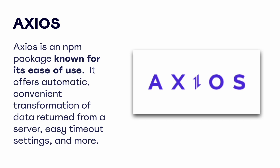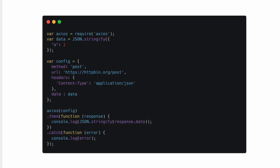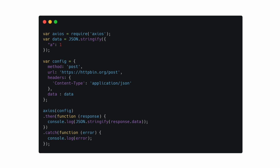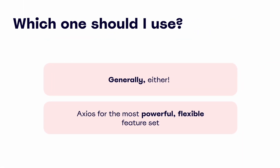NodeFetch isn't the only option, though. Another popular package is Axios. This package is known for its ease of use and flexible feature set, including things like automatic transformation of strings to JSON, easy timeout settings, and more. You might notice that this example isn't so different from the NodeFetch example — it's simply another way of making a request with another package. Depending on your case, either of the HTTP packages we've mentioned here could easily work well for you. It's up to you to decide which one you prefer.